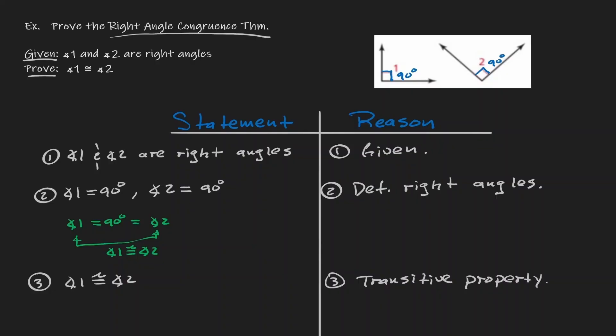Very important: notice that the last statement within my statement and reason table is the statement that I wanted to prove — angle one and angle two are congruent to each other. And notice that every single step that we took had a reason to back it up. This is what we refer to as the right angle congruence theorem: if you have two angles that are right angles, then they're congruent to each other.